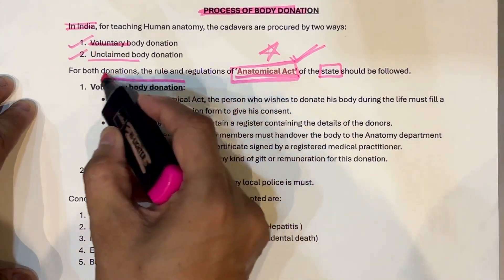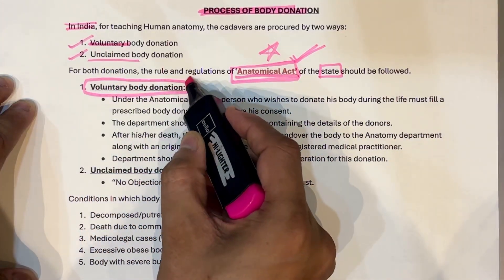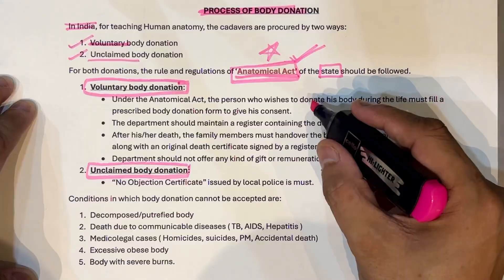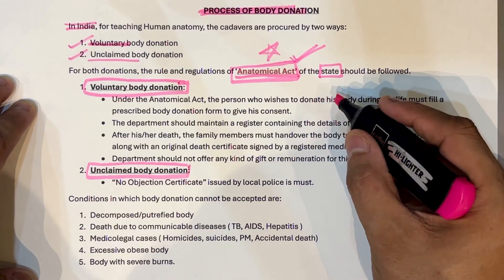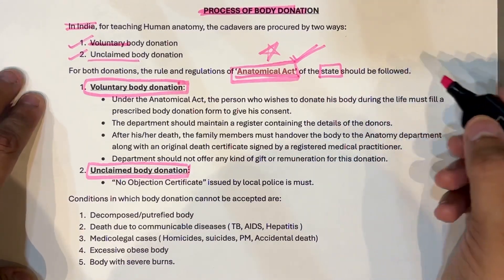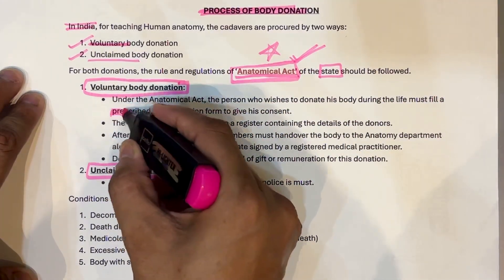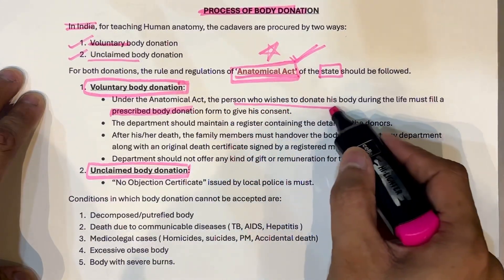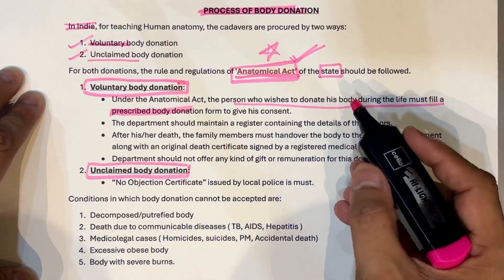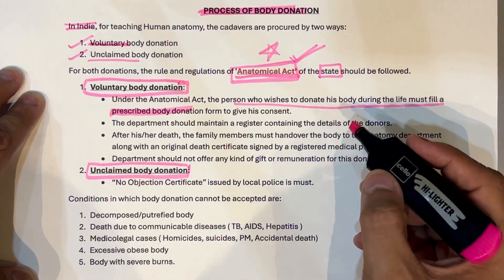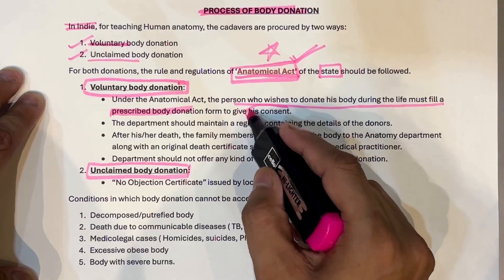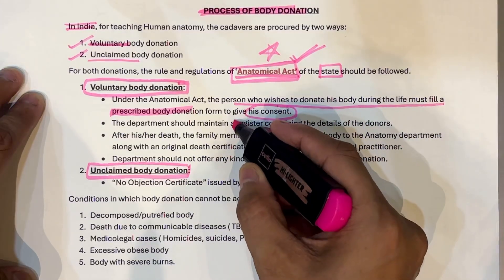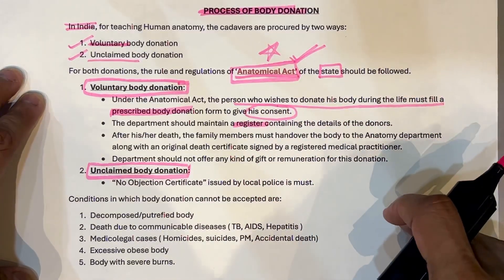You have to write down a few lines about voluntary body donation and a few about unclaimed body donation. For voluntary body donation, there has to be a prescribed body donation form available in each and every anatomy department. The person who wishes to donate the body during his life must fill that prescribed form — it is a kind of consent that he is ready to donate his body after death. Second, the department should maintain a register with all details of that body donor.